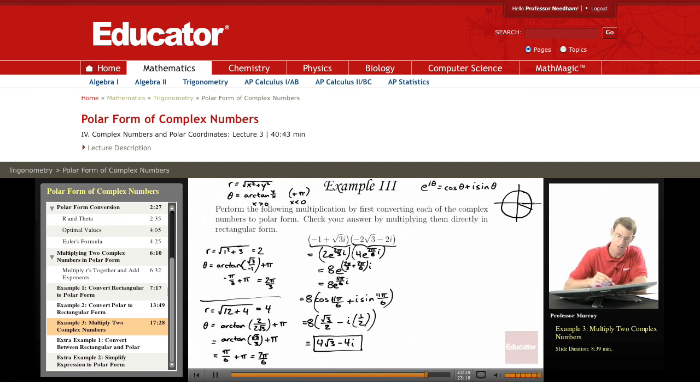It says we have to check our answer by multiplying them directly in rectangular form. So let's do the check here. We'll foil the multiplication out. I'll do the check in blue.